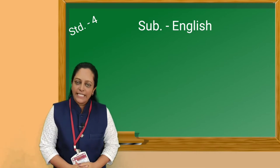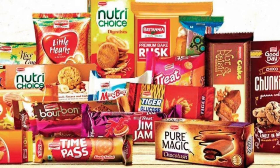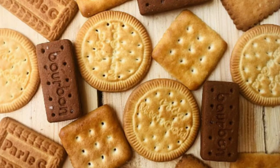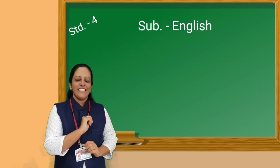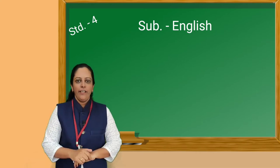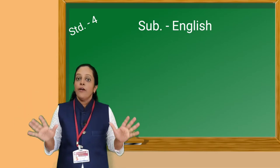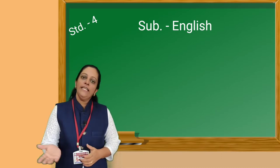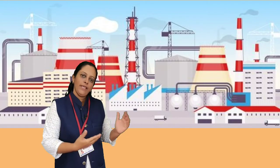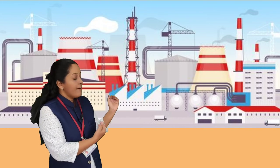We also call biscuits as cookies. We get different types of biscuits in the shop. We see different types of biscuits and they are also in colorful packets. We also get biscuits in different shapes. Do you know, students, where are your favorite biscuits made? Yes, they are made in a factory. A factory is a building or group of buildings where goods are manufactured. Have you seen any factory? No? Then come with me. Here we are — this is a factory.